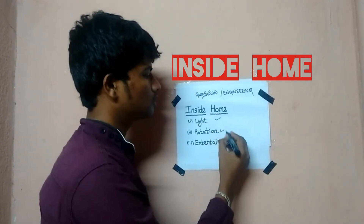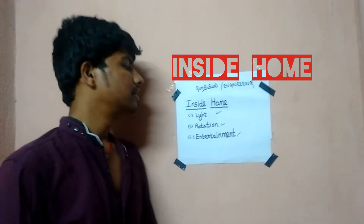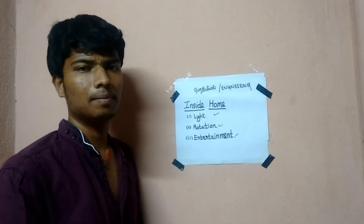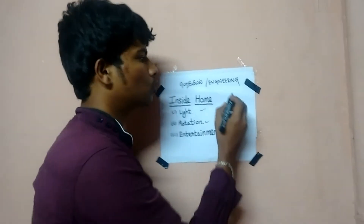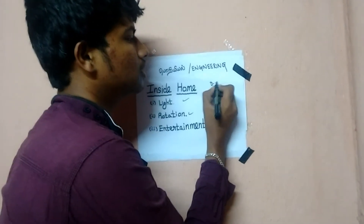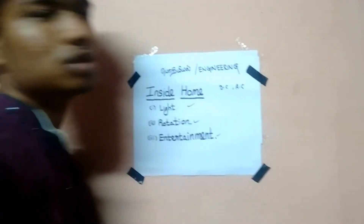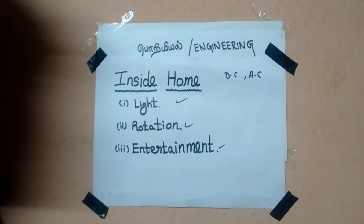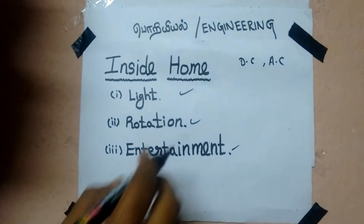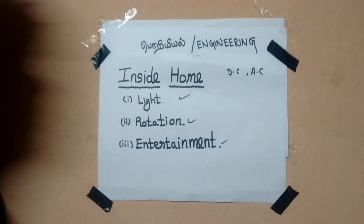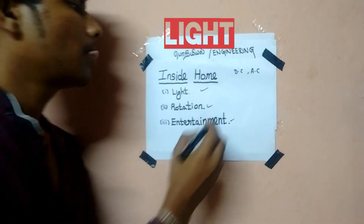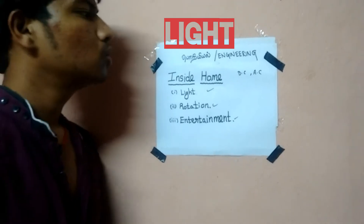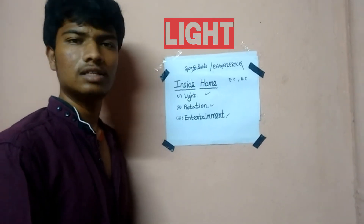One light, this rotation, and this one. First, we're going to talk about the current. One is DC and one is AC. We'll point out the DC current, as we're going to talk about DC and AC and the light.